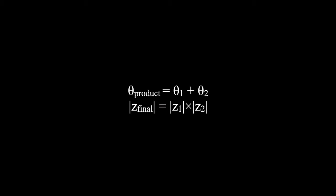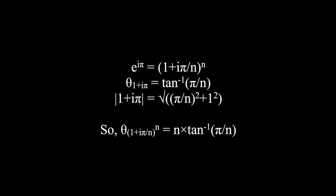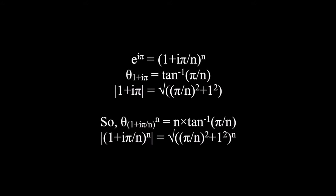When we multiply complex numbers together, what ends up happening is that their angles get added together, and the length gets multiplied together. As raising a number to the nth power is just multiplying it by itself n times, the result of this will have an angle n times as large, and its length will be this, raised to the nth power.